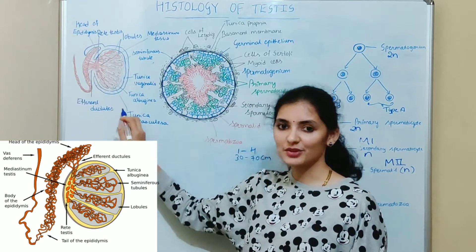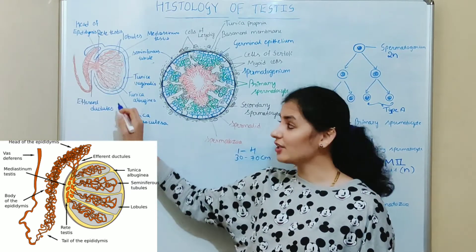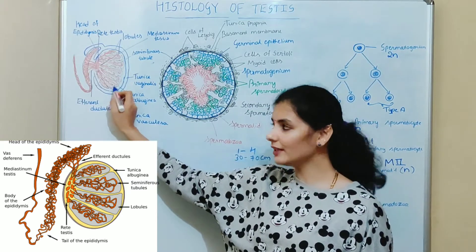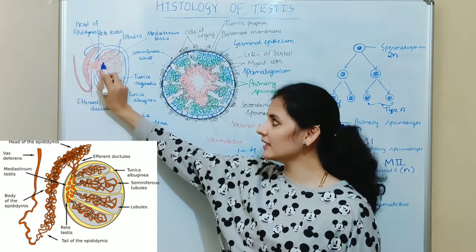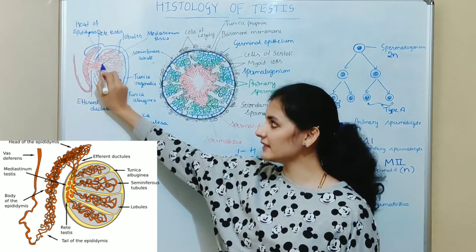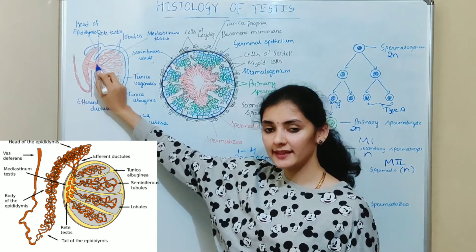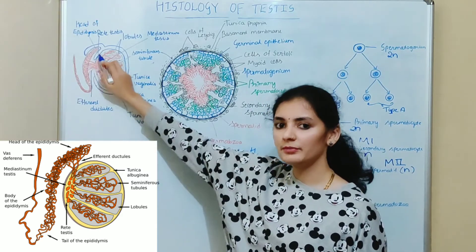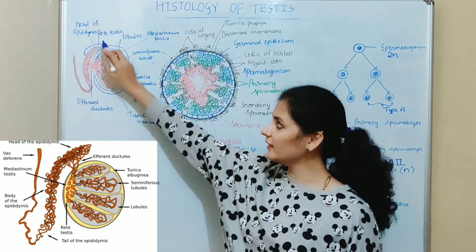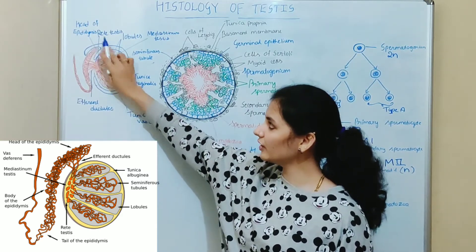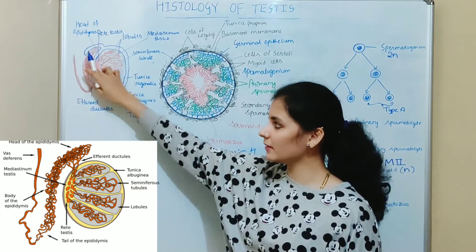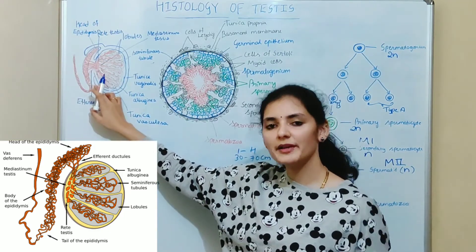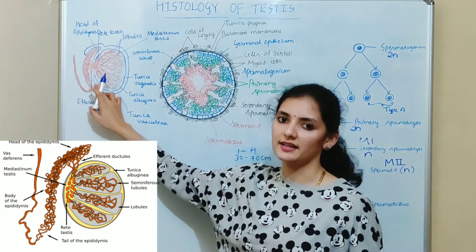The sperm which is produced inside the seminiferous tubules enters the straight tubules, then the rete testis. From the rete testis, it enters the efferent ductules. From the efferent ductules, it enters the head of the epididymis, then the body, and then the tail of the epididymis, where the sperm matures and is stored.